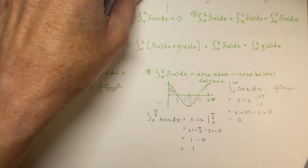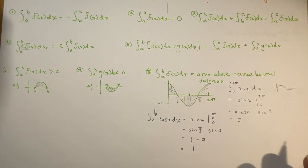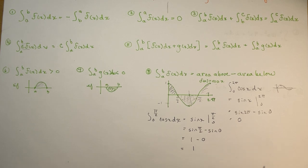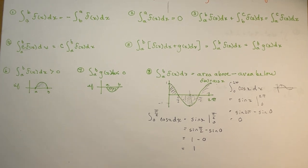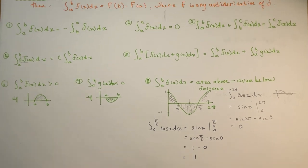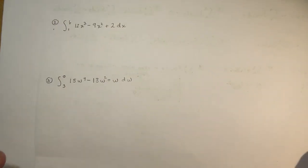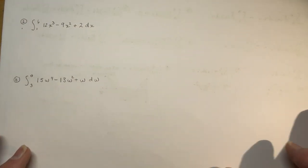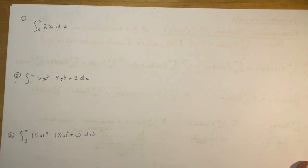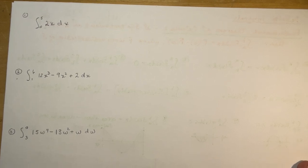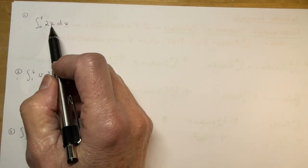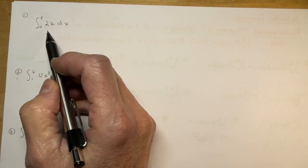So basically, those are the rules that you might have to work with, which gives you a little bit of flexibility in your calculations. Now let's go to some examples — first, let's find the definite integral between 0 and 5 of 2x dx.